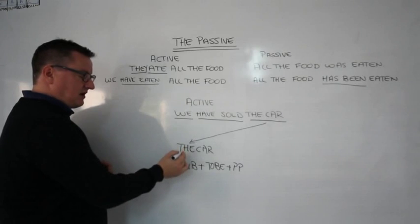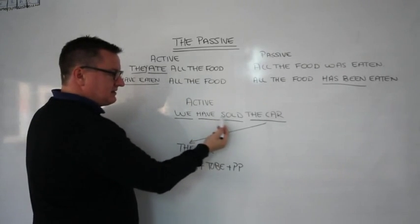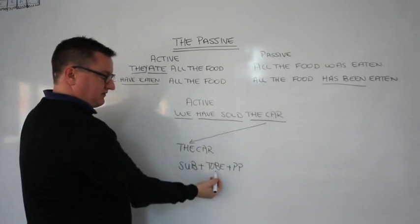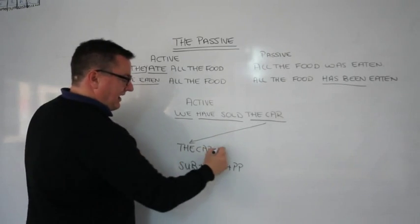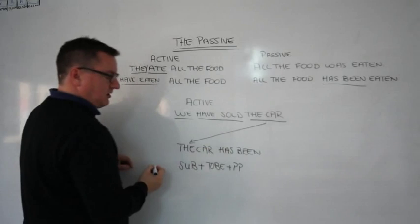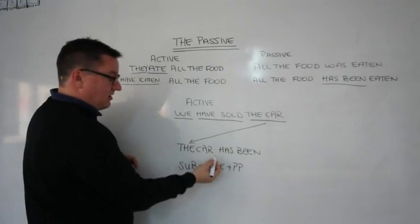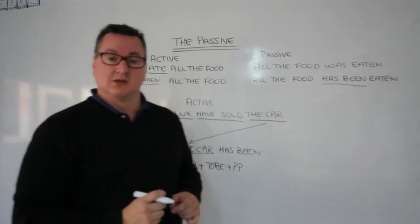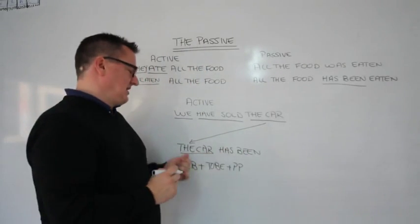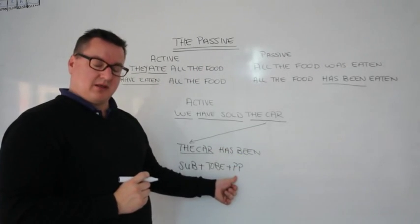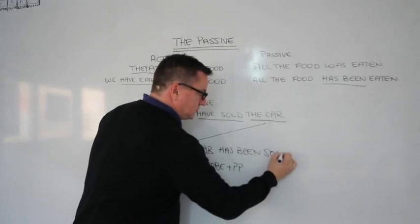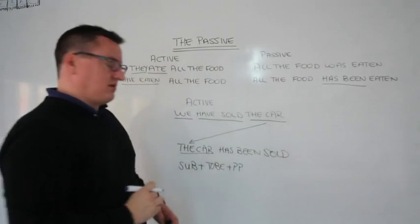So: the car. The verb is present perfect, so you need to put this into present perfect. The car — has been. Why 'has'? Why not 'have'? Because 'the car' is third person, so you need the third person form of 'have', which is 'has.' The car has been — plus the past participle — sold. The car has been sold.